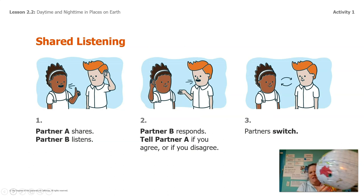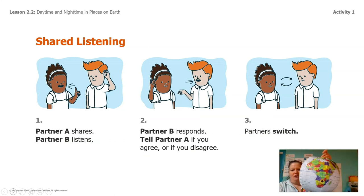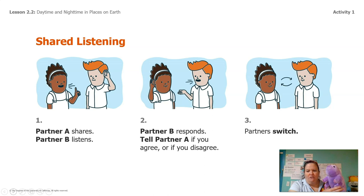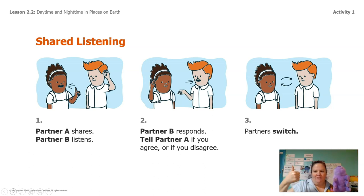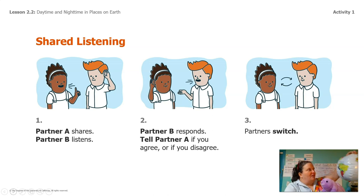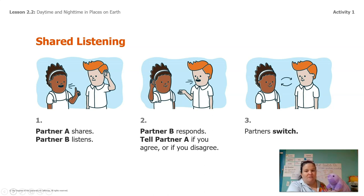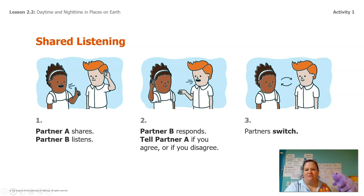So we're going to use this globe and some shared listening. For this next part, you need a partner. My partner today is going to be Lavender. If you have somebody else watching this video with you, you can use them as a partner, or you can use a stuffed animal like I'm doing, or you can even use your thumb. You're going to share something you noticed about where we put those stickers while the other person listens, then the listener says what they heard, and then partner A says if they agree or disagree. Then you switch.